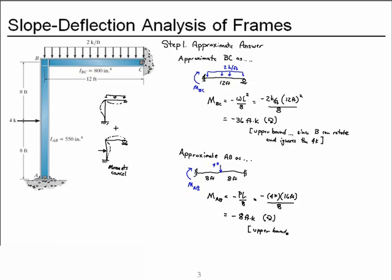This should also be an upper bound, although since end B can rotate some and end A is truly fixed, it will probably pick up more moment if there were only the 4 kips, but we're totally neglecting the impact of the distributed load. So we'll say it's probably an upper bound. Now we have something to compare against once we've performed our slope-deflection analysis, so that we can determine whether our results are reasonable.